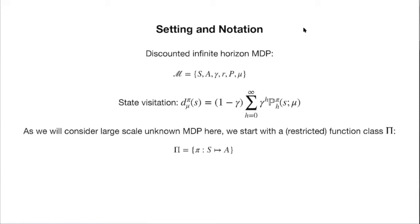Starting from this lecture, we consider large-scale Markov decision processes where p and r are unknown, and we focus on a policy optimization approach. We start with a function class pi containing all possible policies — each a mapping from states to actions. For example, one policy could be a two-layer neural network that takes state as input and outputs a distribution over actions.